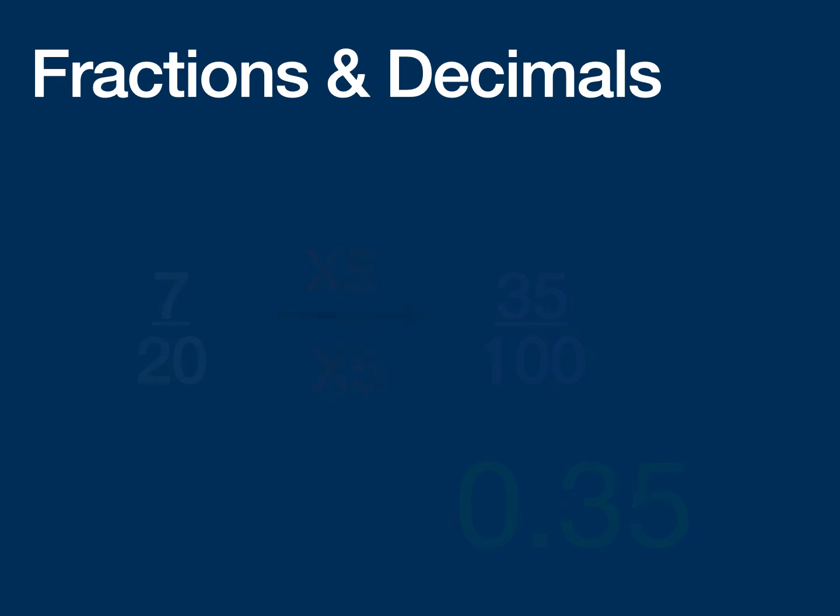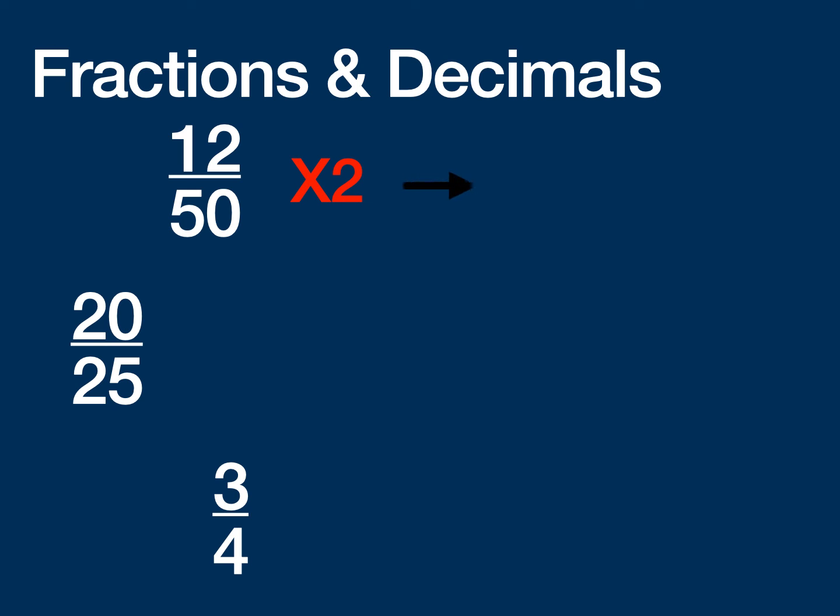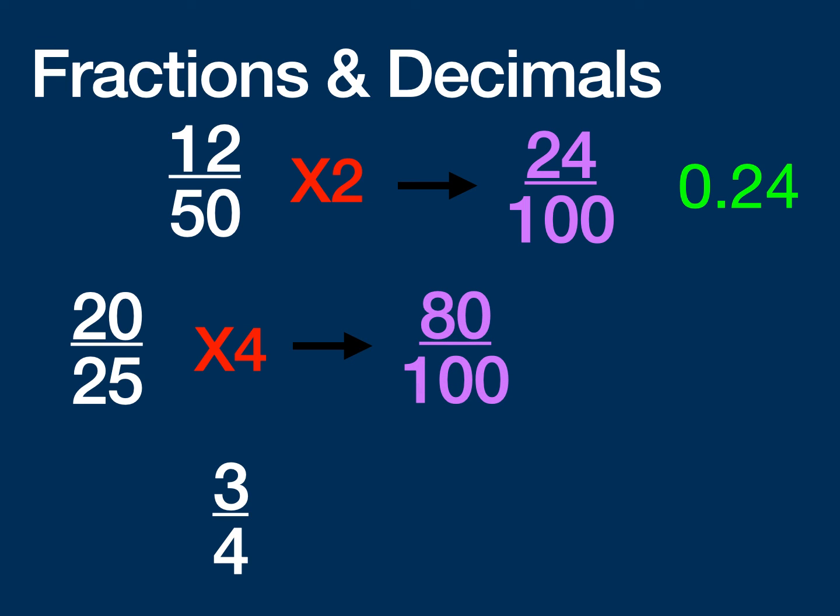So there are these other fractions I'm going to quickly go through as well that you can also turn into decimals fairly easily. If you have 50 on the bottom, well, I can multiply the top and the bottom by 2, and I'll end up with 24 over 100, and that will translate to 0.24.